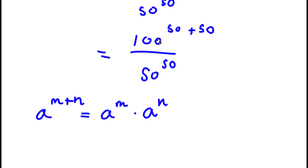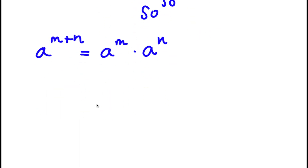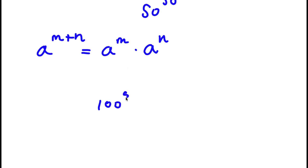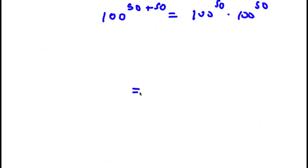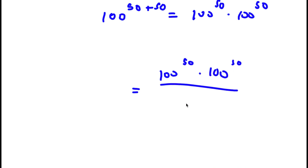So in this case, I have 100 to the power of 50 plus 50. This is going to equal a to the power of m, so 100 to the power of 50, times a to the power of n — and n is the same thing as m — so again 100 to the power of 50. Now I have 100 to the power of 50 times 100 to the power of 50, over 50 to the power of 50.